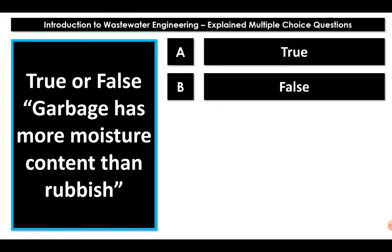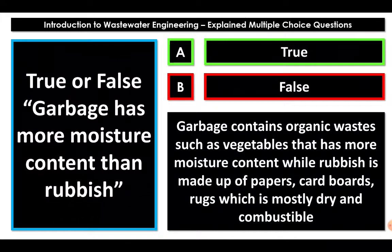State whether true or false: garbage has more moisture content than rubbish. When we say garbage, it consists of mostly organic waste — such as vegetables — which have very high moisture content. Rubbish, on the other hand, is made up of discarded material such as papers, packing boards, cardboards, and rugs, which are mostly dry — low in moisture content and highly combustible. Therefore, the statement is true.